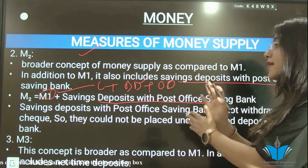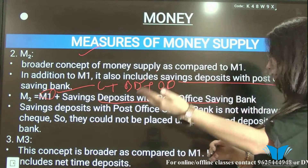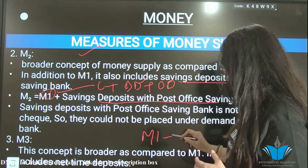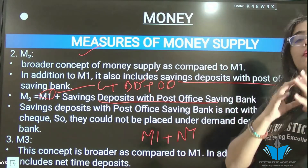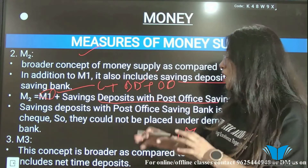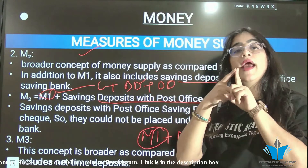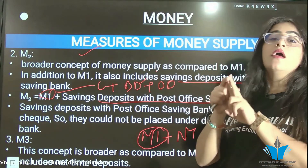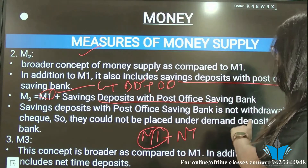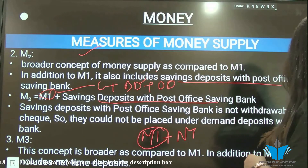M3 is broader than M1. M3 equals M1 plus net time deposits with banks. Net time deposits are deposits made for a particular time period, like recurring deposits or fixed deposits. So M3 includes: currency and coins held with the public, plus demand deposits with banks, plus other deposits with RBI, plus net time deposits with banks.